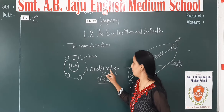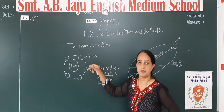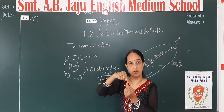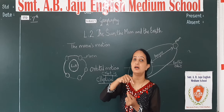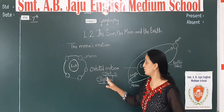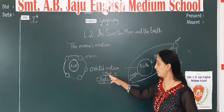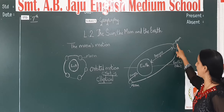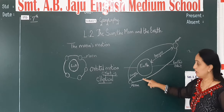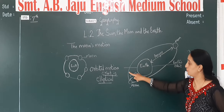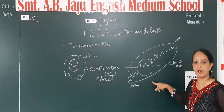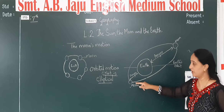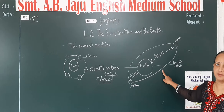What is the orbital motion of the moon? What is the shape of this orbit? The shape of the orbit is elliptical. Elliptical means oval shape. When the moon is moving around the earth, the shape of its orbit is elliptical.